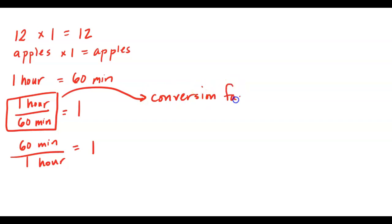We use conversion factors a lot in chemistry because we need to translate grams, which we can discover in the lab, into moles — the language chemistry is written in. And we can take moles and convert them into grams so we can work in the lab to figure out exactly the quantities we need. I'm going to show you a method of how we do the conversion.